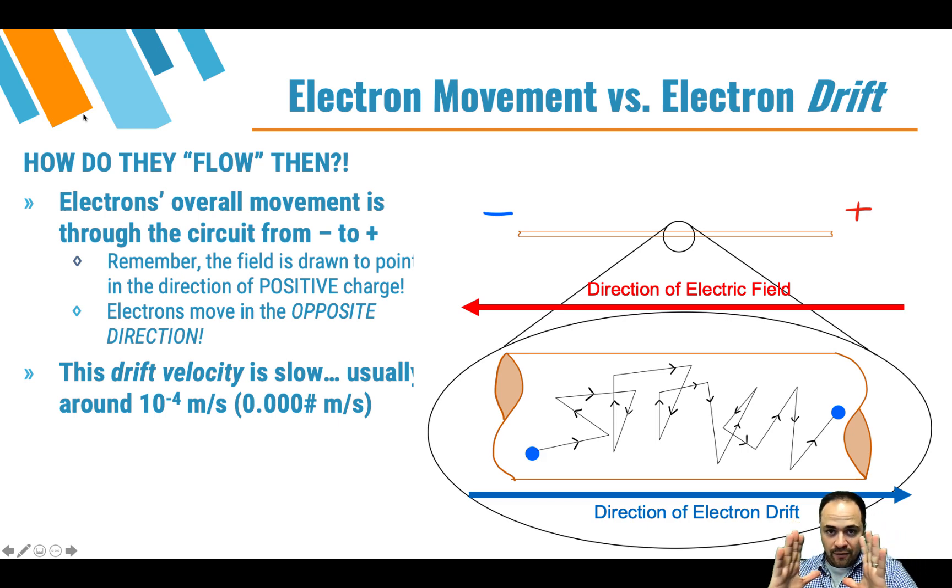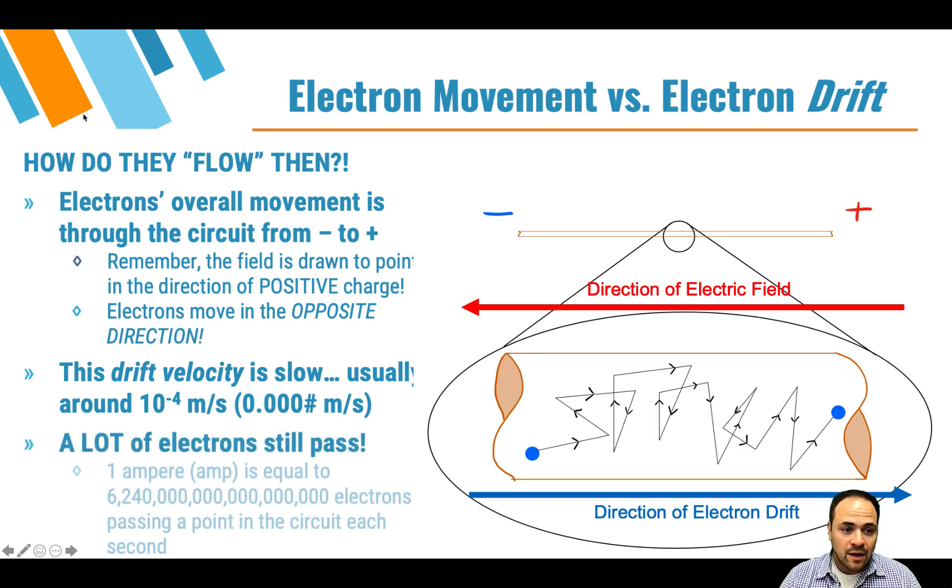The drift velocity of electrons is really rather slow, so they're bouncing around and all over the place. But overall, their motion is through the circuit. And this actual drift as they're doing this, eventually they're making it over here. That drift speed is actually really low. It's somewhere on the order of 10 to the negative 4 meters per second, which is a pretty small number. But a lot of electrons still do pass. One amp of current means that 6.24 times 10 to the 18th electrons have passed a particular point in a wire in a circuit every second. So there are still quite a few electrons that can pass through a circuit, even though this drift velocity is rather slow.